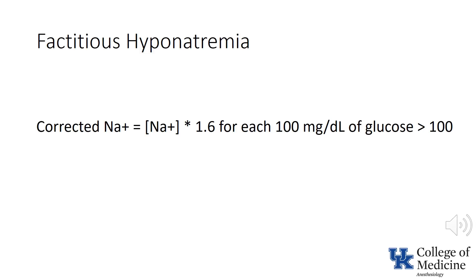Another abnormality in electrolytes may be hypophosphatemia. Studies have shown no benefit from treating hypophosphatemia in patients with DKA, but if the patient has respiratory failure it's probably worth considering, because muscle weakness is the primary manifestation of hypophosphatemia.